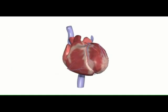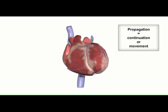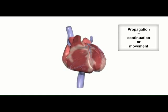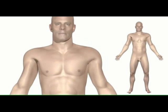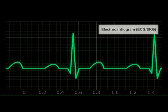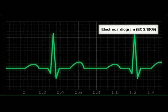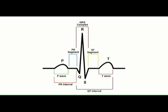The heart's conduction system controls the generation and propagation of electrical signals or action potentials that cause the heart's muscles to contract and the heart to pump blood. This electrical activity can be measured at electrodes placed at specific points on the skin, from which a composite recording is produced in the form of a graph. This recording is known as an electrocardiogram, or ECG, sometimes referred to as an EKG — a tracing of the overall electrical activity of the heart, resulting from the propagation of many action potentials.